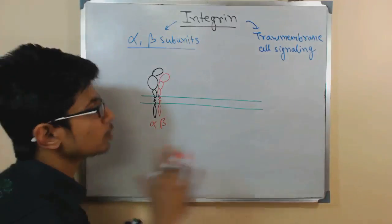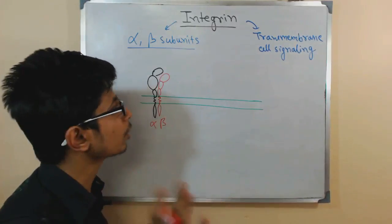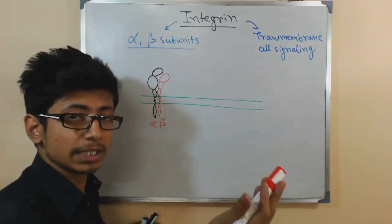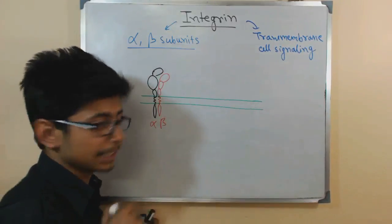So, what happens actually, there are two different types of cell signaling that are brought about using integrin. One is the inside-out signaling, another one is the outside-in signaling.